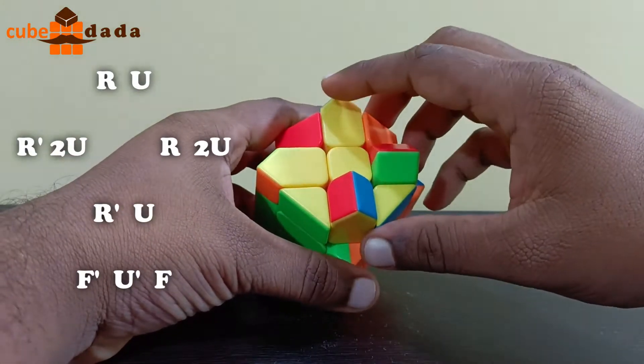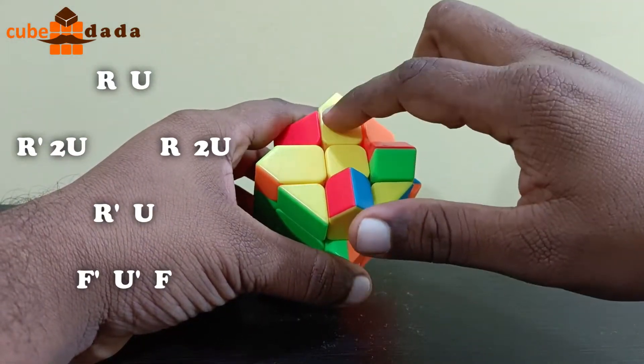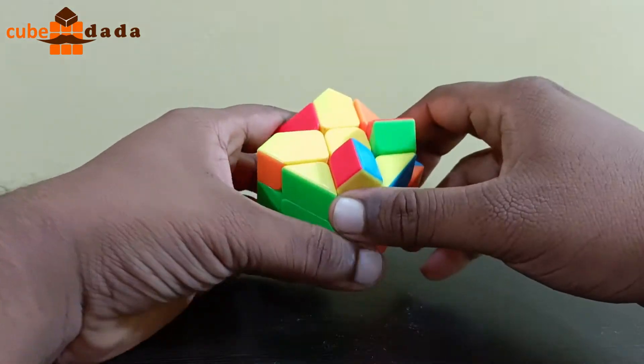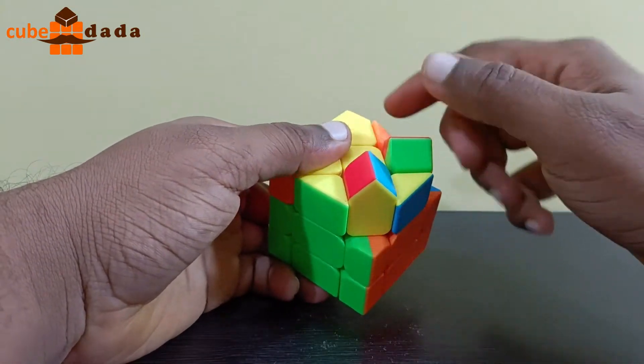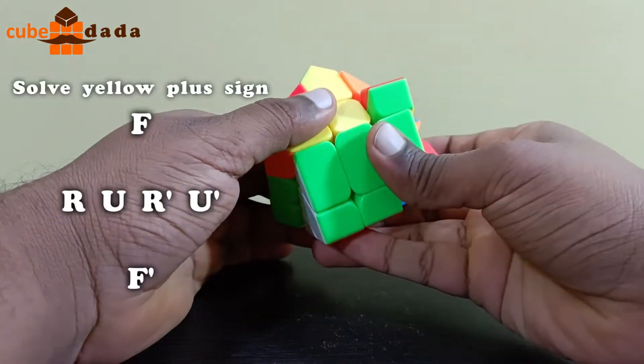So basically, our edge parity is solved. We got these two edges solved and two are not. Now we are going to apply that formula F R U R dash U dash F dash and we will solve the yellow plus sign.